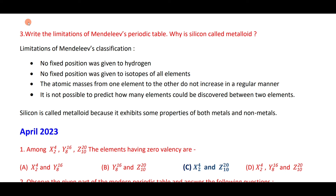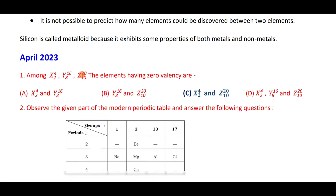Limitations of Mendeleev's periodic table: no fixed position was given to hydrogen; no fixed position for isotopes; atomic masses do not increase in a regular manner, making it impossible to predict elements between two elements. Silicon is a metalloid because it exhibits both properties of metals and non-metals.